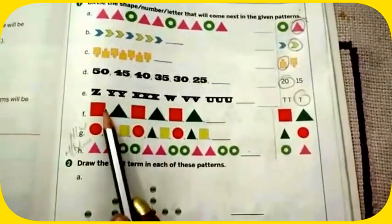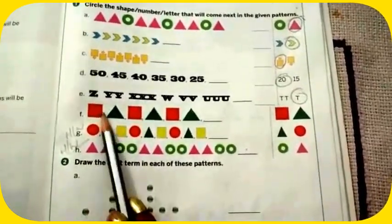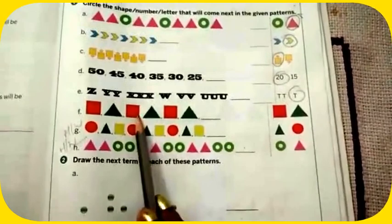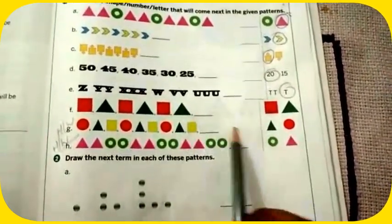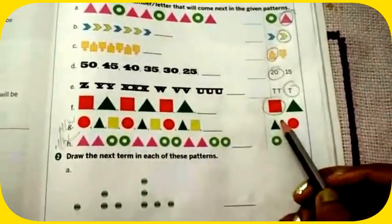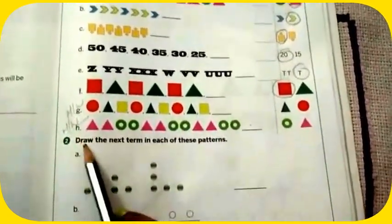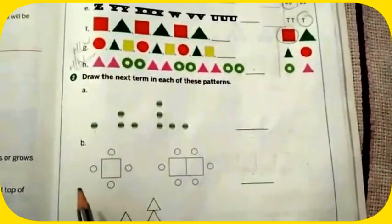Next you see this one: red square, green triangle, red, green, red, green. Red will come. So you understood. G and H are homework for you.